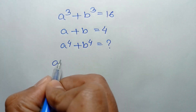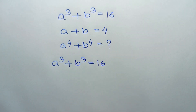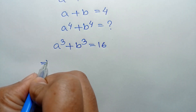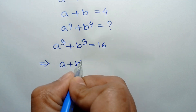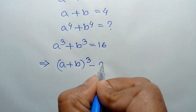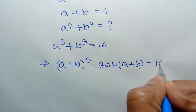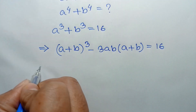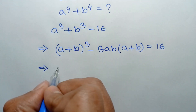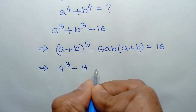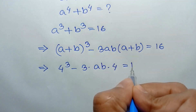We have given a cube plus b cube is equal to 16. Applying the formula, a cube plus b cube is equal to a plus b whole cube minus 3ab times a plus b, which is equal to 16. Substituting the value of a plus b equal to 4, we can write 4 cube minus 3 times ab times 4 is equal to 16.